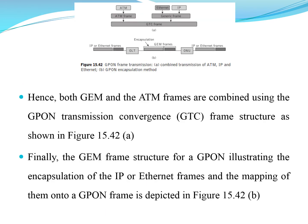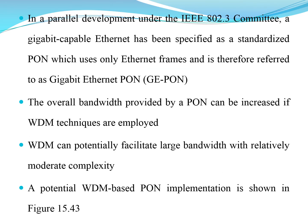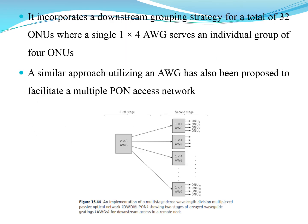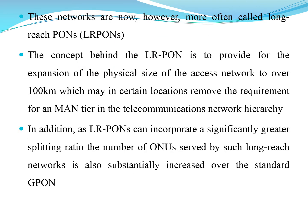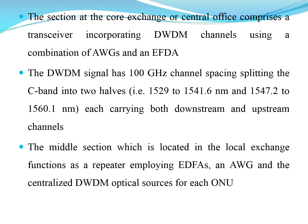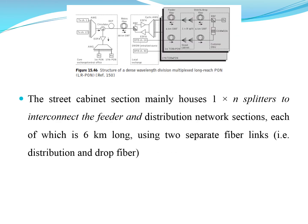This is the arrangement of OLTs with Ethernet frames. Several switches are used for switching between ONUs and ONTs, and an amplifier mechanism is used here. This is the arrangement of dense wavelength division multiplexing used for long-reach point-of-presence networks, which uses circulators, EDFA amplifiers, different types of fibers, and splitters.